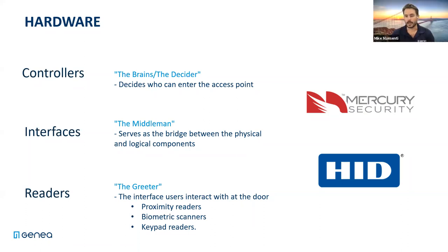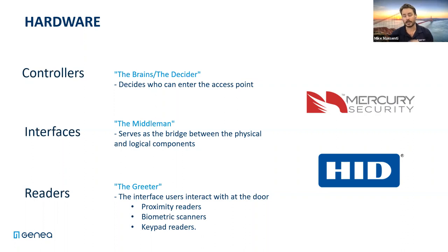Starting top to bottom with controllers - whenever you go into an access control software product and add a user, give them a key card, that all has to get stored locally on a controller. So if the network goes offline for any reason, when you badge in the door still works, recognizes who you are, and opens the door. Really, the controller is that local replication of your server's database. It has all the keys, all the settings, and it's also recording events and syncing that to the server. That's why the controller is the brain of the system on site.